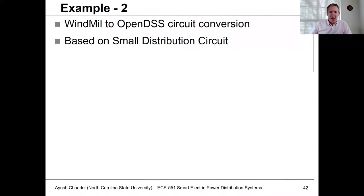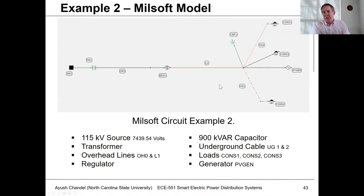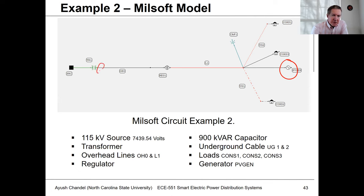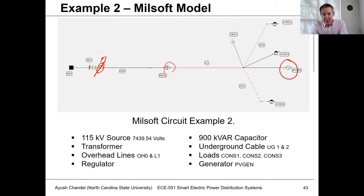Let me go through one more example. We're going to skip example three because this lecture is running a little bit long. This example corresponds to the basic system I put together when we were covering how to use the Windmill program earlier this semester. I've added a generator to represent the PV. I don't have a substation regulator, I've got a downstream regulator with this bus regulated. Let's just stick with the example we built in the previous class.